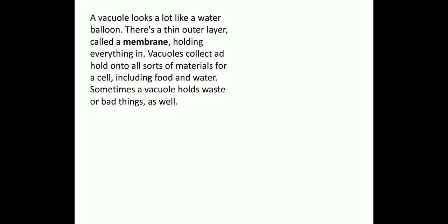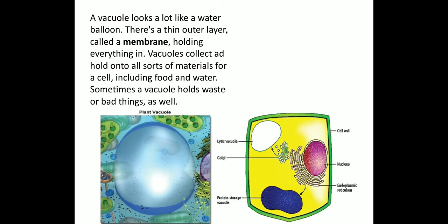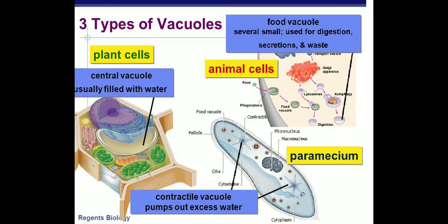Vacuoles collect and hold all sorts of material for a cell, including food, water, and sometimes waste. In this image you can see two types of vacuoles: plant vacuole and animal vacuole. The plant vacuole is much bigger in size, whereas in animal cells the vacuole is much smaller. Vacuoles are present in both plant and animal cells, but differ in size.